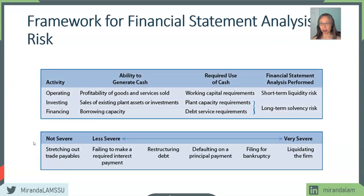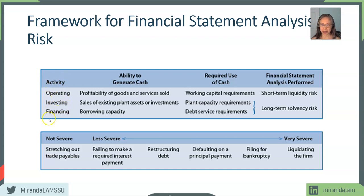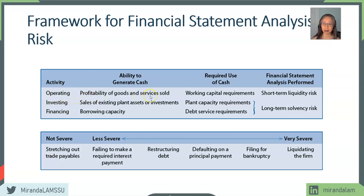Let's take a look at the framework that we're going to use to analyze this. In order to evaluate the risk, one of the key approaches is to separate operating activity from financing activity. You may remember from the statement of cash flow that we separated cash flow into operating cash flow, financing cash flow, and investing cash flow. We're going to use a similar framework here. Operating activities are related to a company's ability to generate cash based on its sales of goods and services.